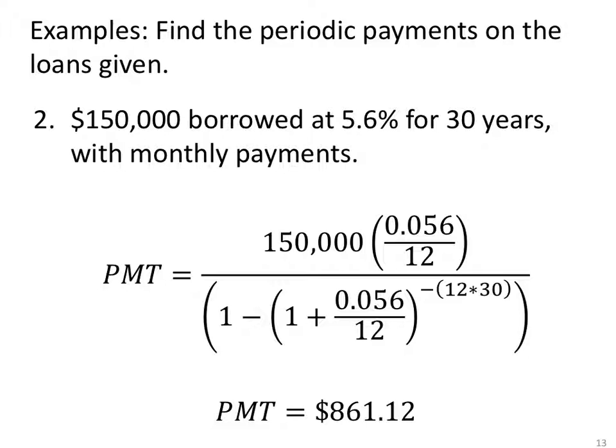Last example here of this type. You find the periodic payment. Maybe this is a house loan. $150,000. I live in a great economy, by the way. We could buy houses for that amount of money. So if you live outside of the Las Cruces, El Paso area, it's a great place to live. $150,000 borrowed at 5.6% for 30 years with monthly payments.